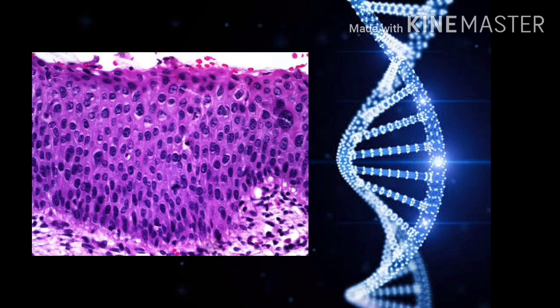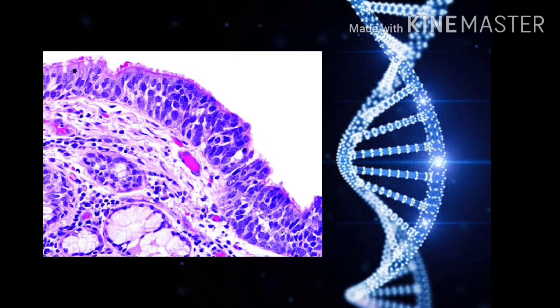There are two very common examples. The first one is dysplasia in the uterine cervix and the next one is dysplasia in the respiratory tract.